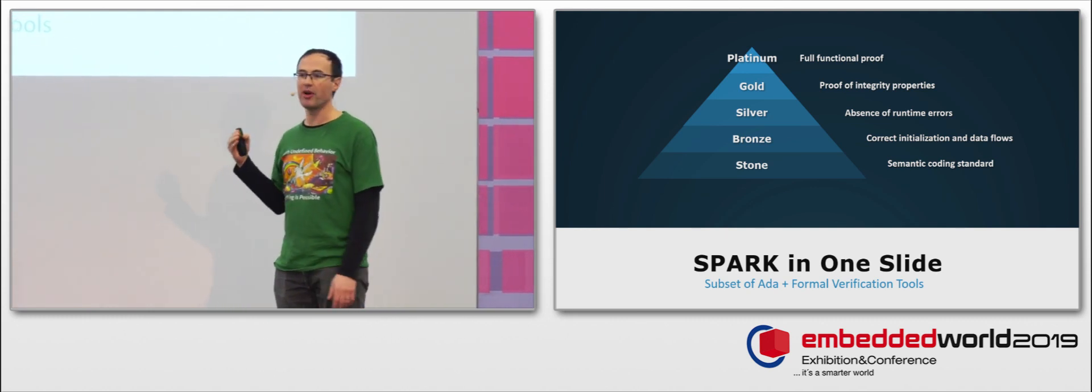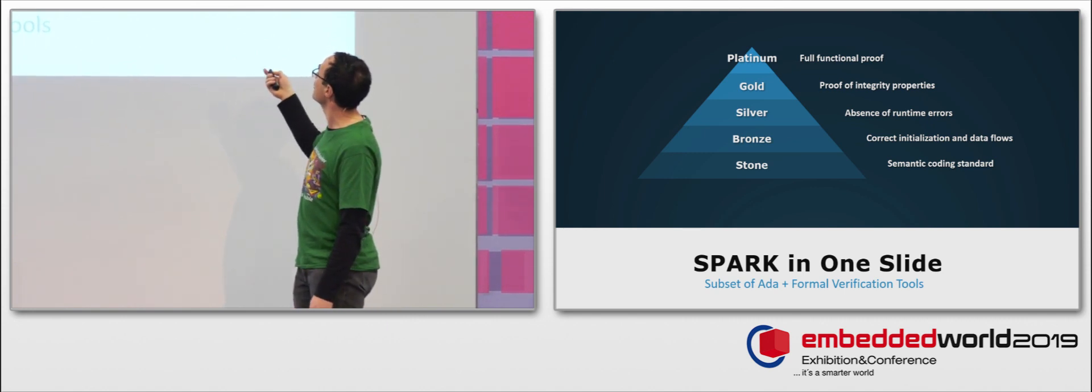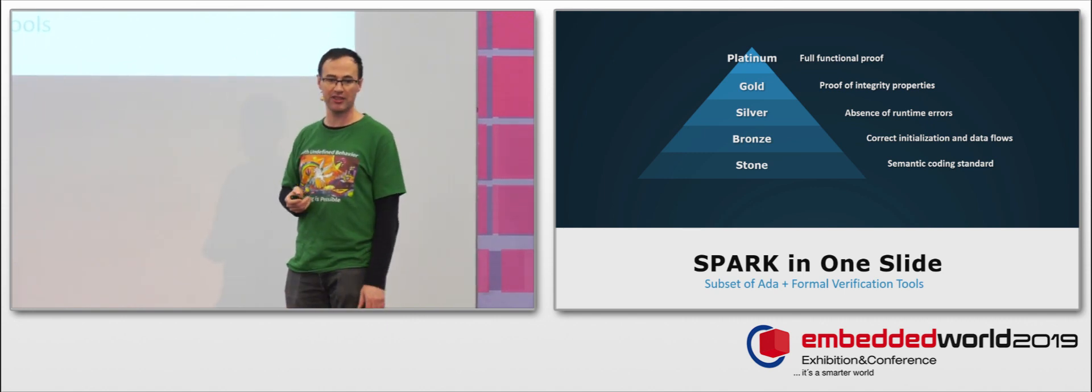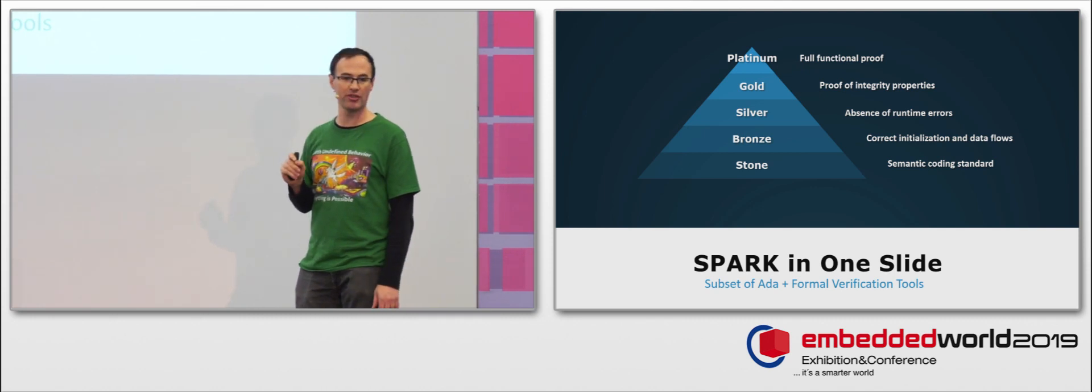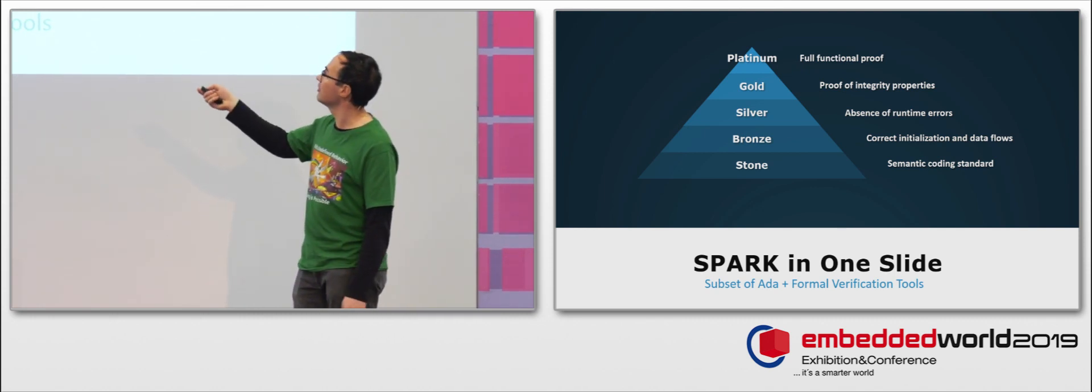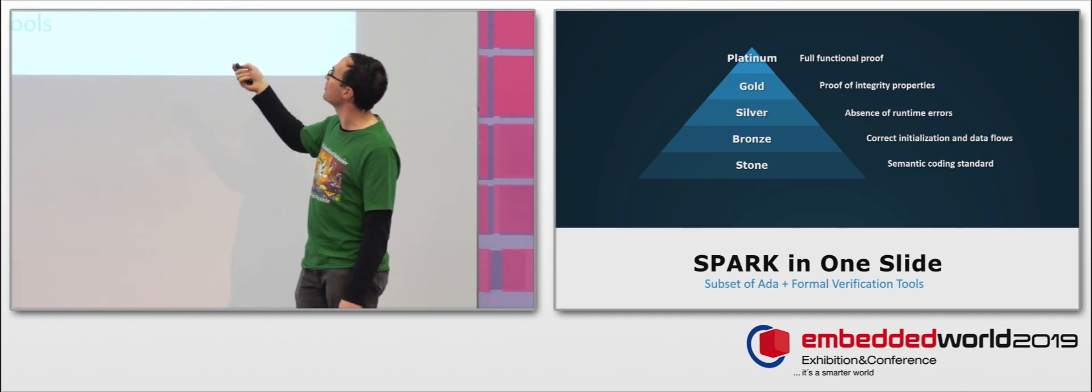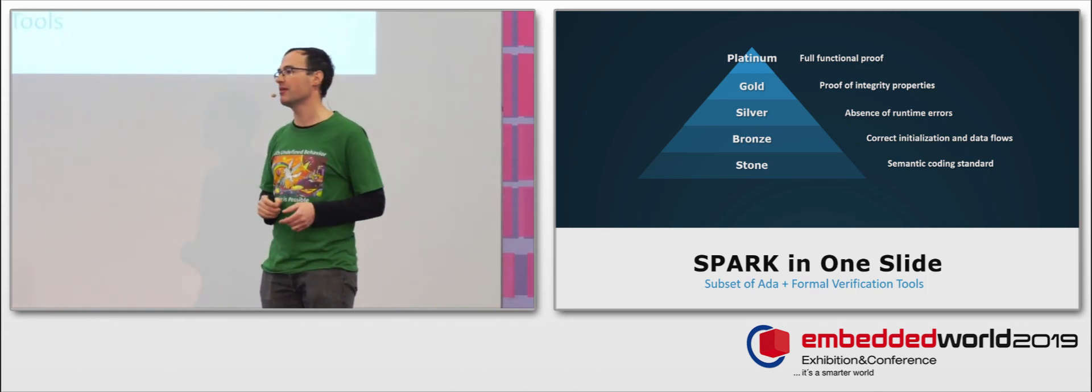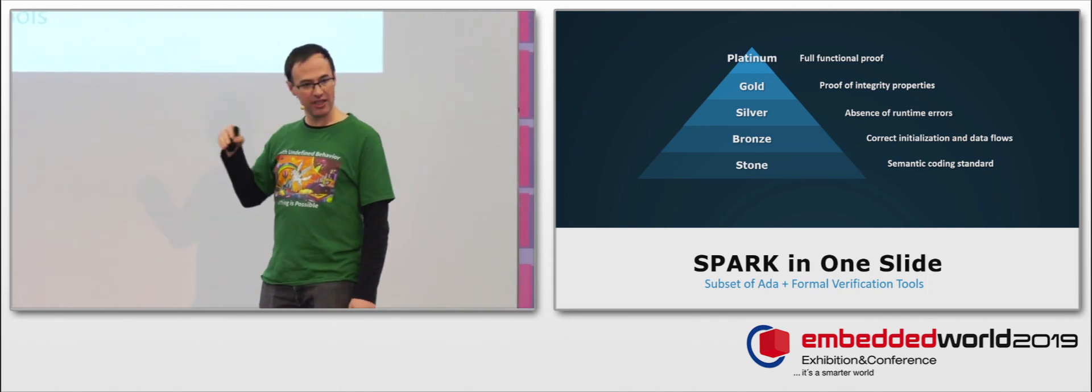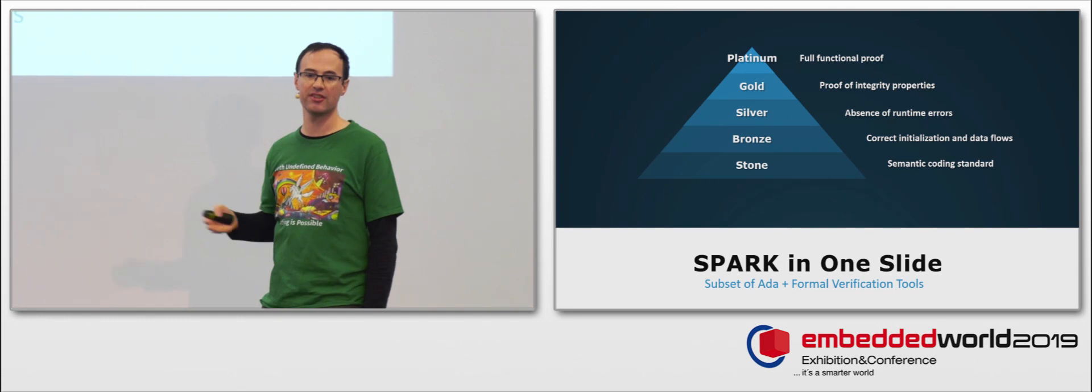On top of that, the Spark analysis can demonstrate that correct initialization and correct data flows of your programs are respected. That's the bronze level. On top of that, the Spark analysis tool can prove that there are no runtime errors in your program. That's the silver level. On top of that, you can specify properties in your program related to security or safety and demonstrate them formally. That's the gold level. And if you want to go beyond that, you can go up to full functional correctness. That's the platinum level.